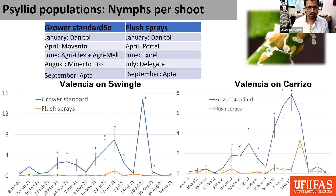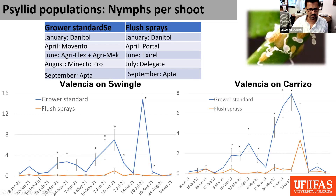Same situation for nymphs per shoot. In the grower standard, there were about two nymphs per shoot on average, whereas in the blocks where sprays were conducted on the flush, it was about 0.1 nymphs per flush. In the Valencia on Carrizo, the grower standard showed about four nymphs per flush on average, whereas only 0.6 nymphs per flush in the flush-timed spray blocks.